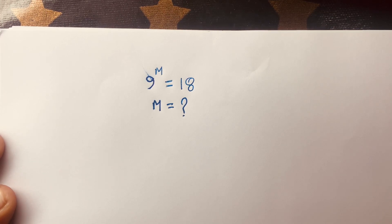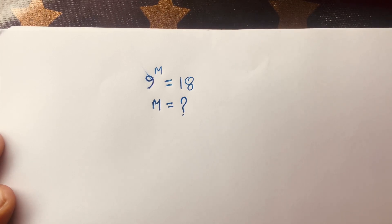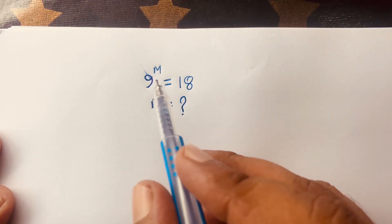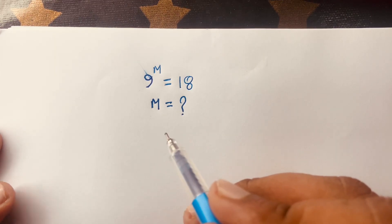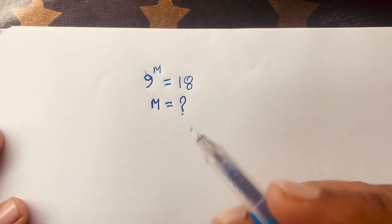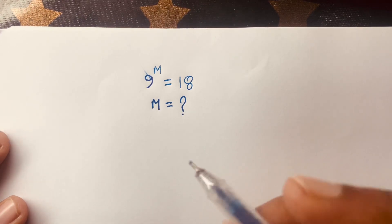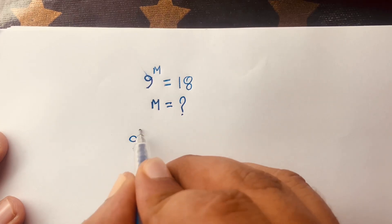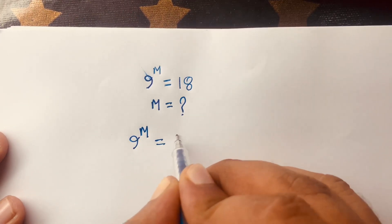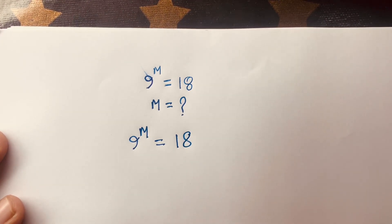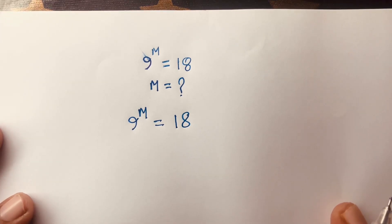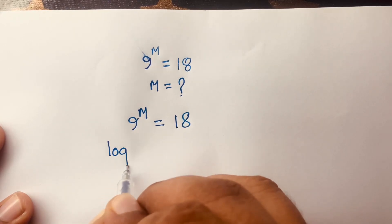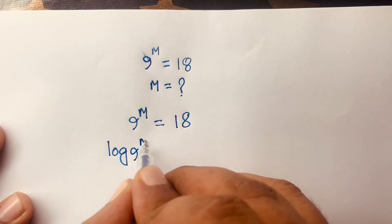Hello everyone. In this video we solve this Olympiad equation: 9 to the power m is equal to 18. We'll find out what is the value of m in this exponential equation. So our question is 9 power m is equal to 18. I'll use both sides log.